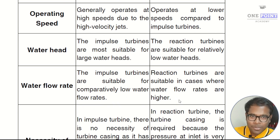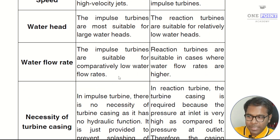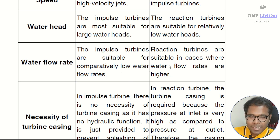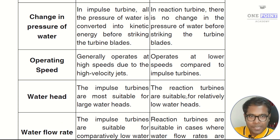The next difference is based on water flow rates. Impulse turbines are suitable for comparatively low water flow rates, whereas reaction turbines are suitable in cases where the water flow rates are relatively higher.